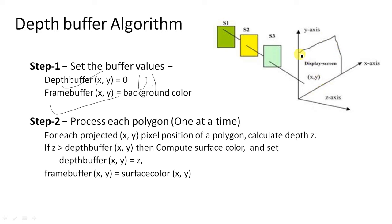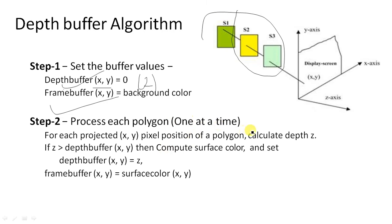We have a two-dimensional plane X and Y representing our projected object. In step one, we initialize the depth buffer Z equal to 0 and the frame buffer to the background color of the screen, which can be either black or white. In step two, for each polygon surface one at a time, and for each projected XY pixel position of that polygon, we calculate the depth Z.